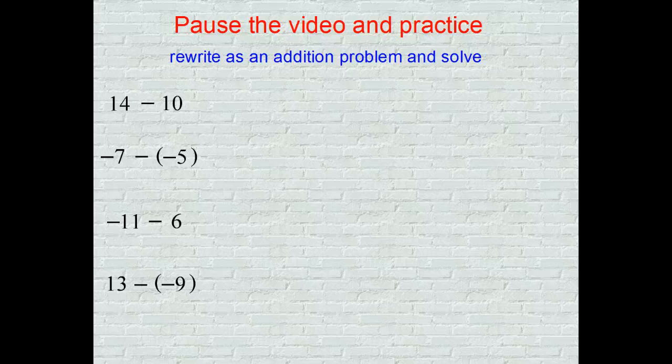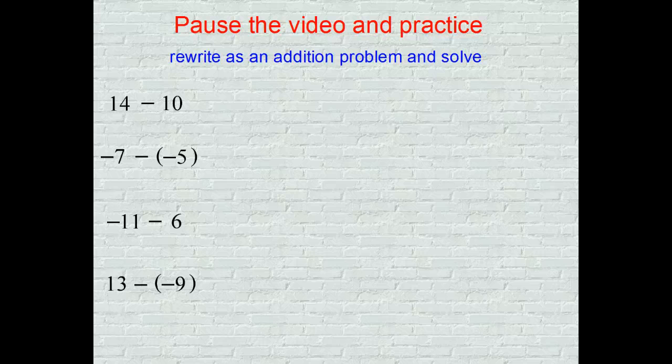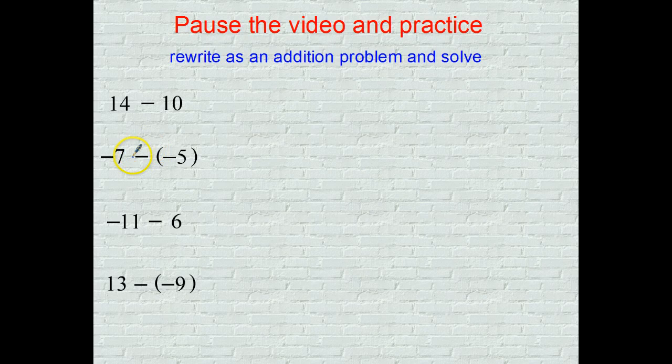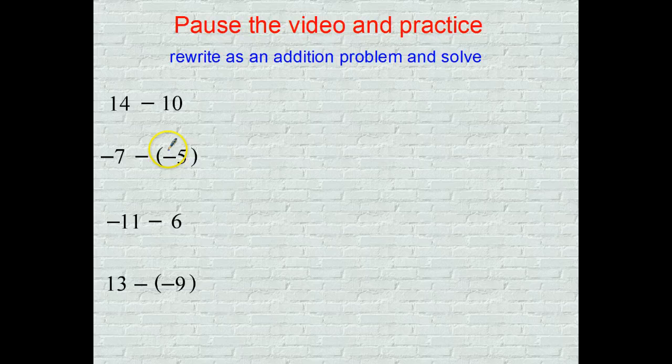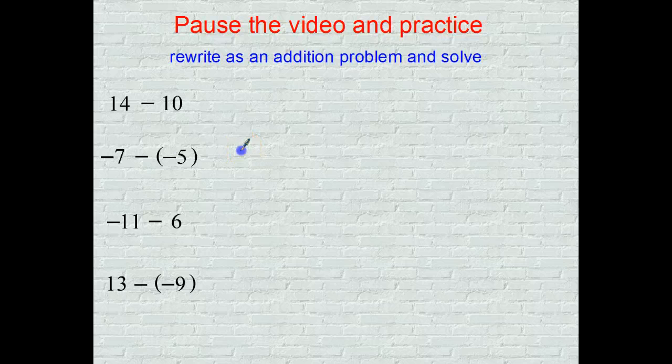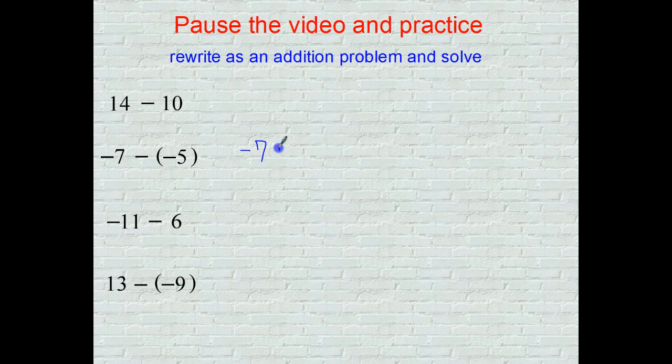Problem 2: we are not allowed to subtract negatives, so we're going to change this into an addition problem. The additive inverse says change the subtraction sign to addition and change the second integer to its opposite. Negative 7 becomes negative 7 plus positive 5.